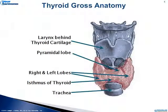The thyroid gross anatomy is very well known to healthcare practitioners. There's a larynx behind the thyroid cartilage; the thyroid has right and left lobes, with an isthmus in the middle, and right below the thyroid you can palpate the trachea. The thyroid is directly accessible to palpation, and we're actually able to determine if there is any swelling or even some nodules. Knowing the gross anatomy is very beneficial to doing part of the physical exam.